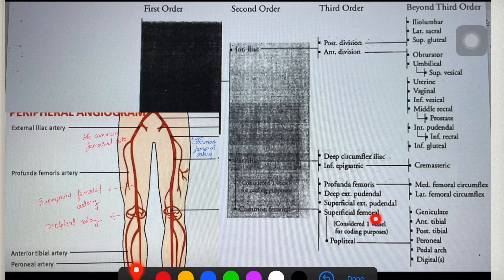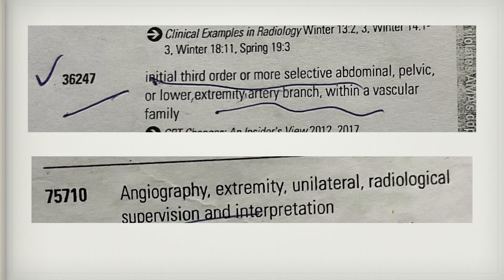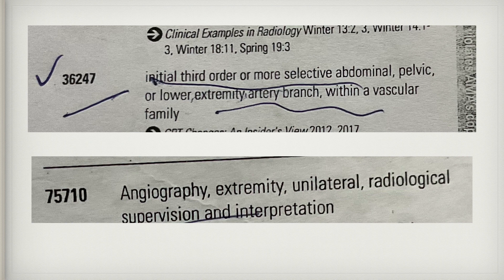The catheter tip is at the superficial femoral artery, and imaging revealed occlusion from popliteal to peroneal artery. So code for the third-order catheter. The CPT codes are 36247 for catheterization and 75710 for angiography. Code 36247 is for initial third-order or more selective abdominal, pelvic, or lower extremity artery branch within a vascular family. Unilateral angiography was performed, so 75710 is appropriate.